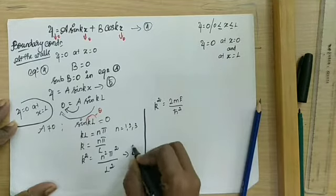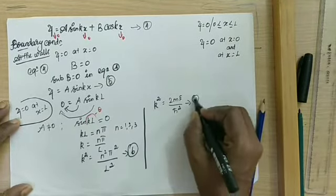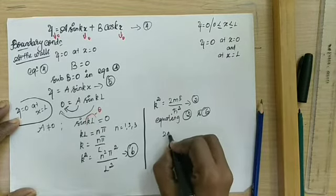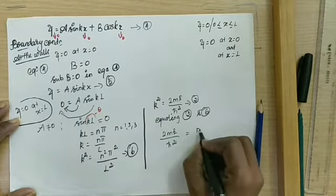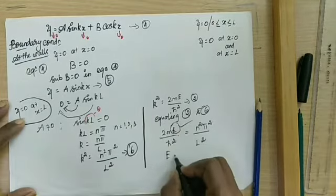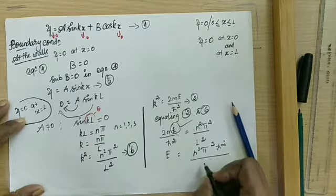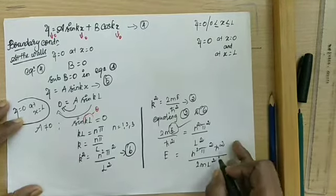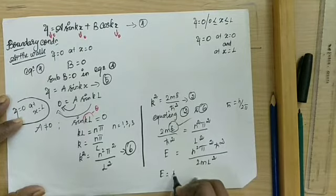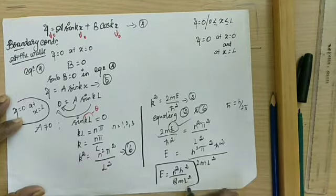Recalling equation 2, where k squared equals 2mE by h-cross squared, and equating equations 2 and 6, we get 2mE by h-cross squared equal to N squared pi squared by L squared. Solving for energy: E is equal to N squared pi squared h-cross squared divided by 2mL squared. Substituting h-cross equal to h by 2 pi, the expression becomes E equal to N squared h squared by 8mL squared. This is the energy of the particle trapped inside the box.